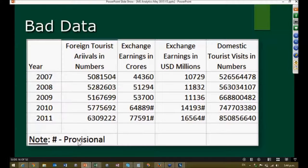If you want to mark it as provisional, put an extra column called 'Status' and then put 'Provisional: Yes or No.' That is what I mean by making data good.